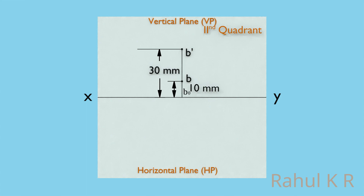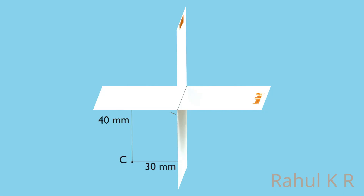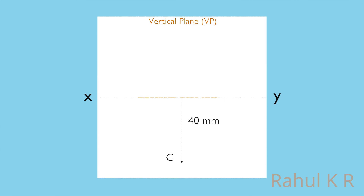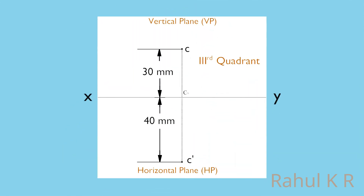Let's move on to the third problem. A point C is 40 millimeters below HP and 30 millimeters behind VP. Draw its projection. Since this point is below HP and behind VP, it is in the third quadrant. As always, the front view is obtained on the vertical plane and is denoted by small letter C dash. The top view is obtained on the horizontal plane and is denoted by small letter C. After rotating the HP clockwise, the projection of the point is obtained. Note that the front view is below the XY line and the top view is above the XY line — just opposite to the projection of points placed in the first quadrant.